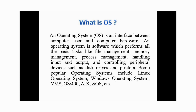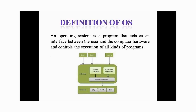Some popular operating systems are Linux, Windows, and VMS. Now, a quick recap of the definition: an operating system is a program that acts as an interface between the user and the computer hardware, and it controls the execution of all kinds of programs. We will see how it controls program execution in further slides.